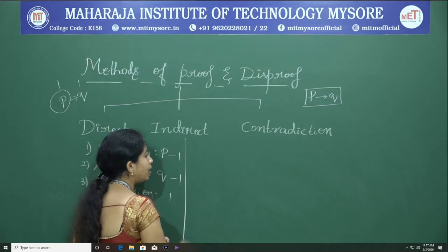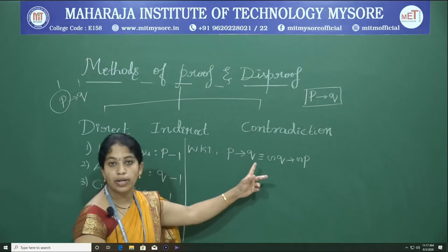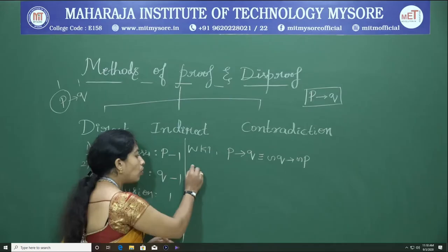Now the second method is indirect proof. Before moving to indirect proof, we note that P conditional Q is logically equivalent to negation Q conditional negation P — this is the contrapositive of a conditional statement.